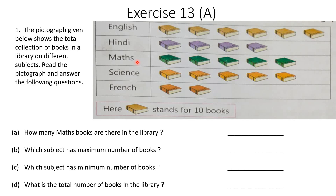The first question asks about maths books. Let's count — there are 5 maths books shown. That means 5 into 10 equals 50. So there are 50 maths books in the library.